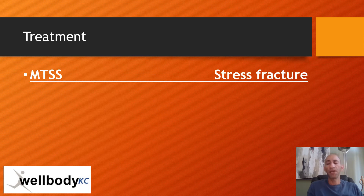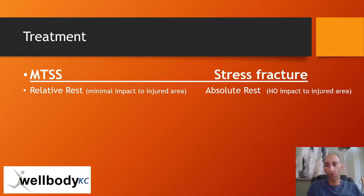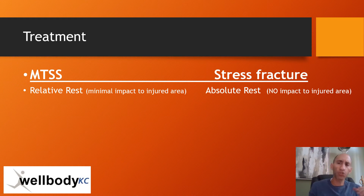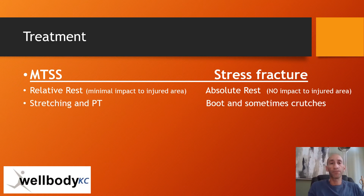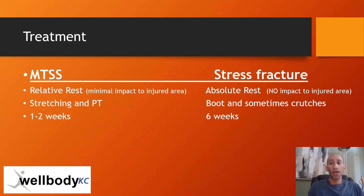So let's talk about treatment. In medial tibial stress syndrome, relative rest is appropriate — minimal impact, and as long as there's no pain in the injured area, continued exercise. With a stress fracture, absolute rest to the injured area is essential. If you continue to impact with a stress fracture, you can delay and even prevent improvement. Stretching and physical therapy starts right away with shin splints. But with a stress fracture, protection is best, even if it involves a boot or crutches if you're limping. With shin splints, things can get better within a week or two, but with a stress fracture, six weeks is the usual minimum.